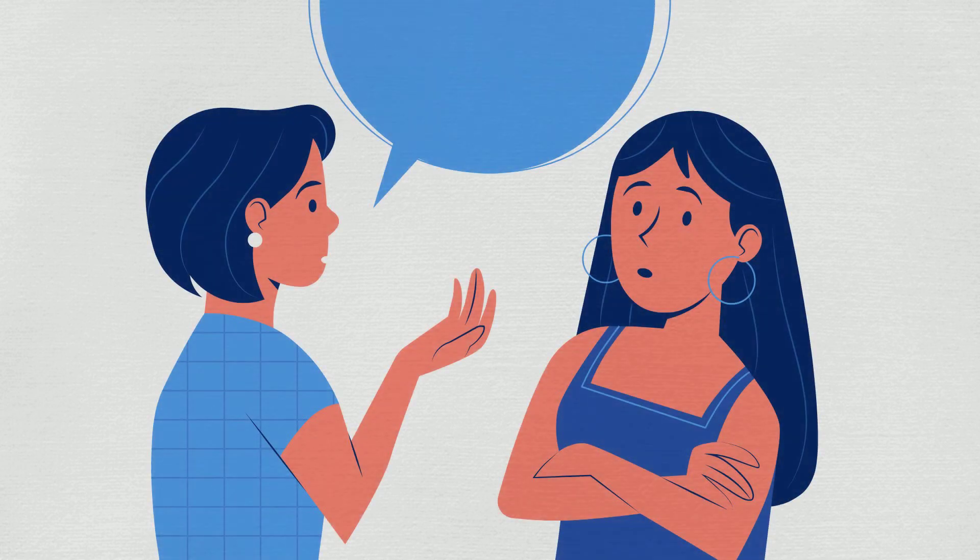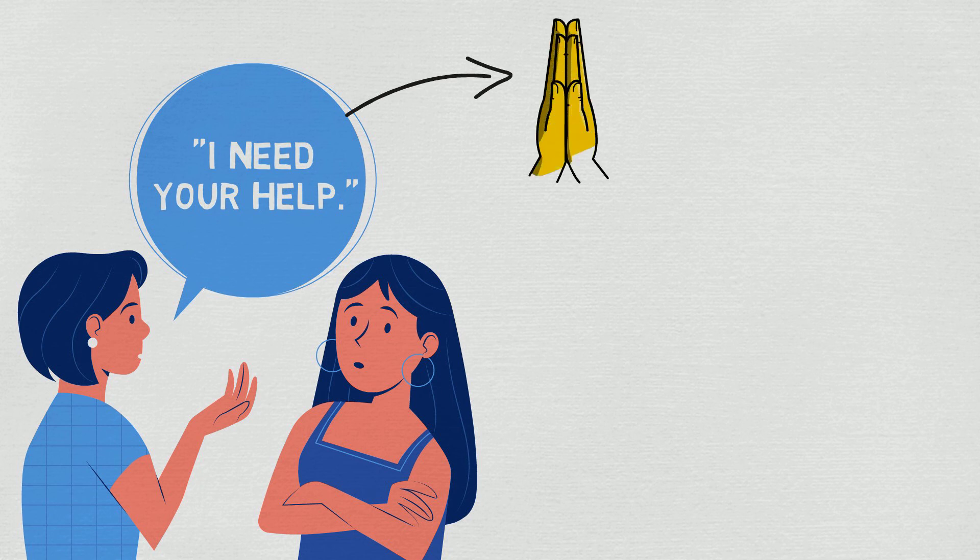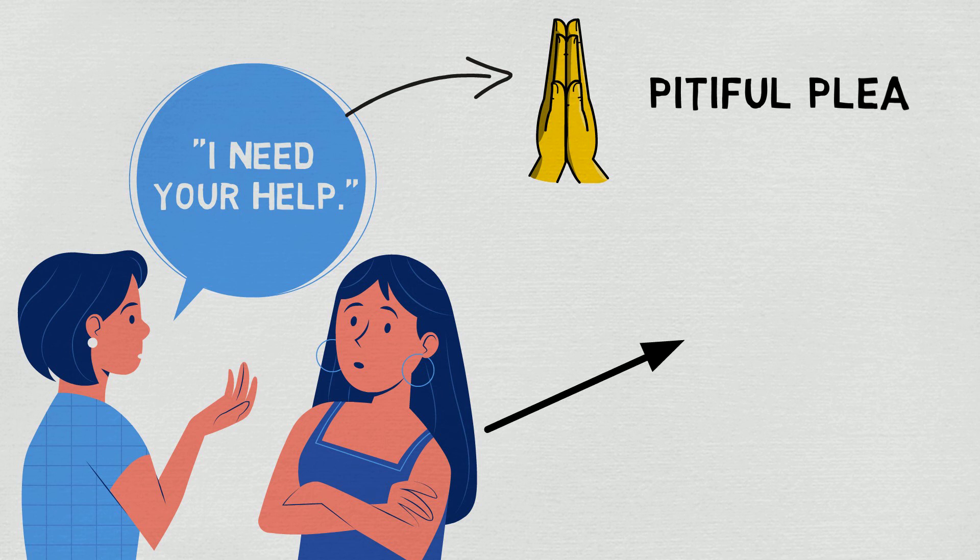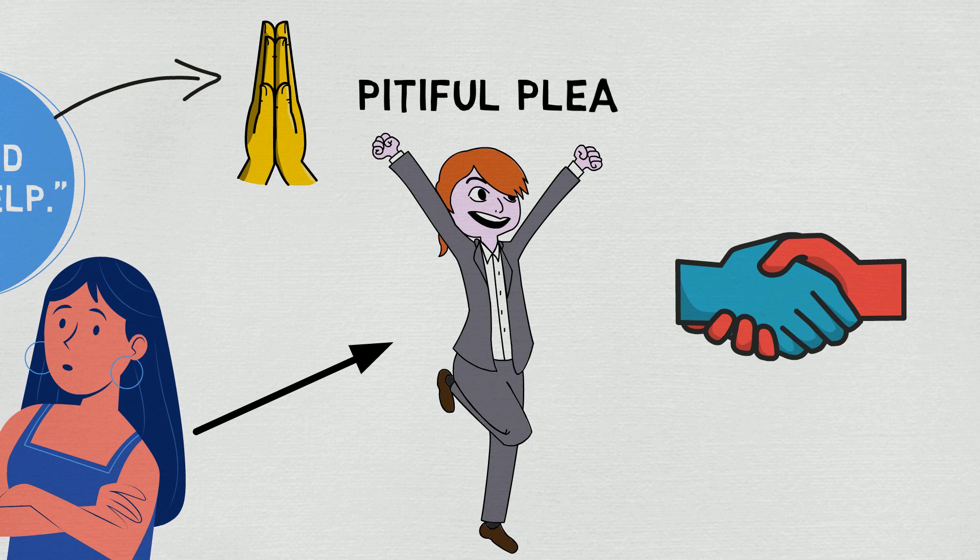Number 10, tell someone you need their help. If you need something from someone, your best bet to get assistance is to say, I need your help. This has a sense of urgency, a petition for that person's very special assistance, and a pitiful plea. These ingredients work together to make the other person feel special and strong, making them more likely to try and help you if they can.